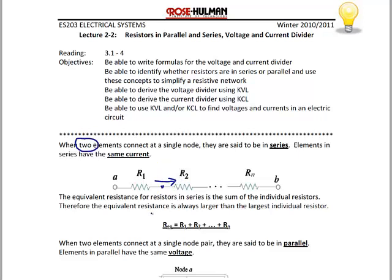When elements are in series, the equivalent resistance seen for those resistors is the sum of the individual resistances. Therefore, the equivalent resistance of a network of resistors in series is always larger than any individual resistor. Let me show you a simple example of what I mean.